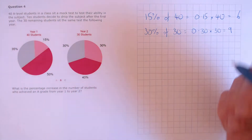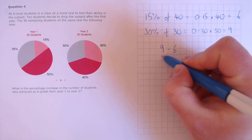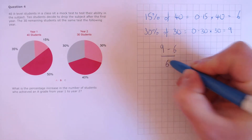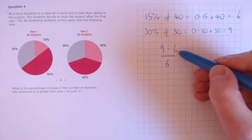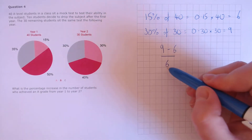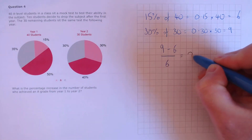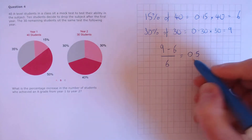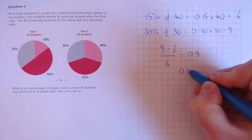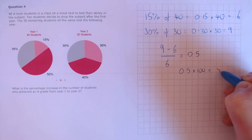Finally, we need to find the percentage change. That's 9 minus 6, divided by 6 — the new value take away the original value, divided by the original value. This gives us 0.5. We need this as a percentage, so 0.5 times 100 equals 50%.